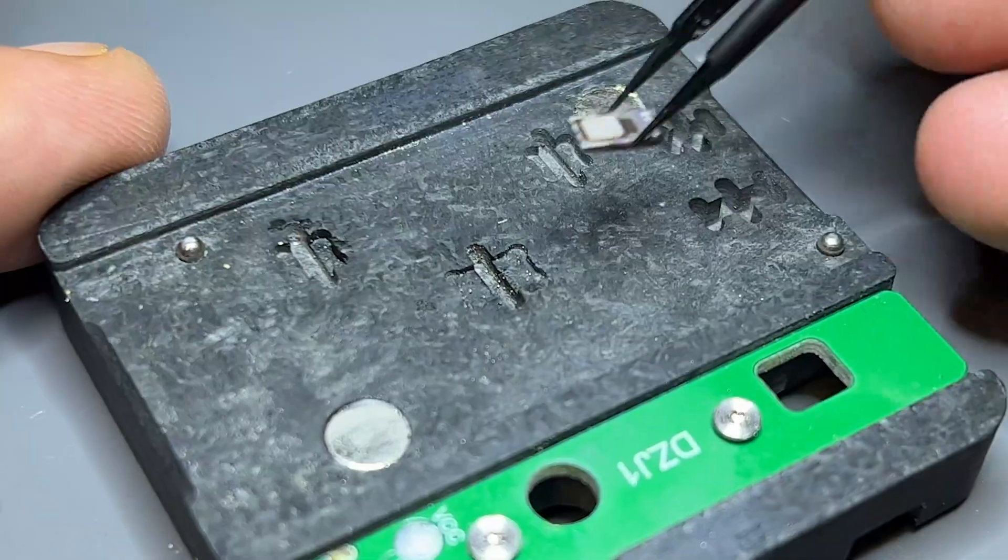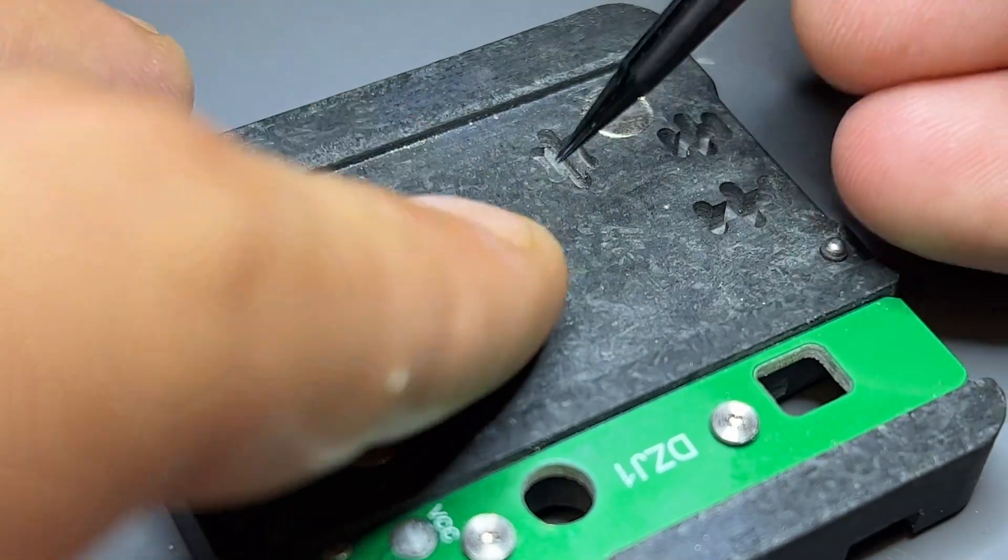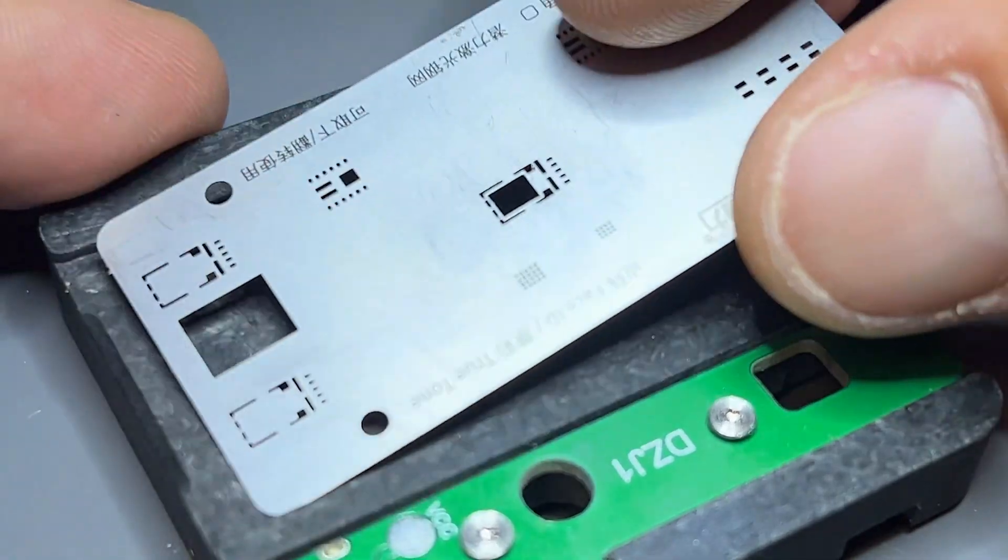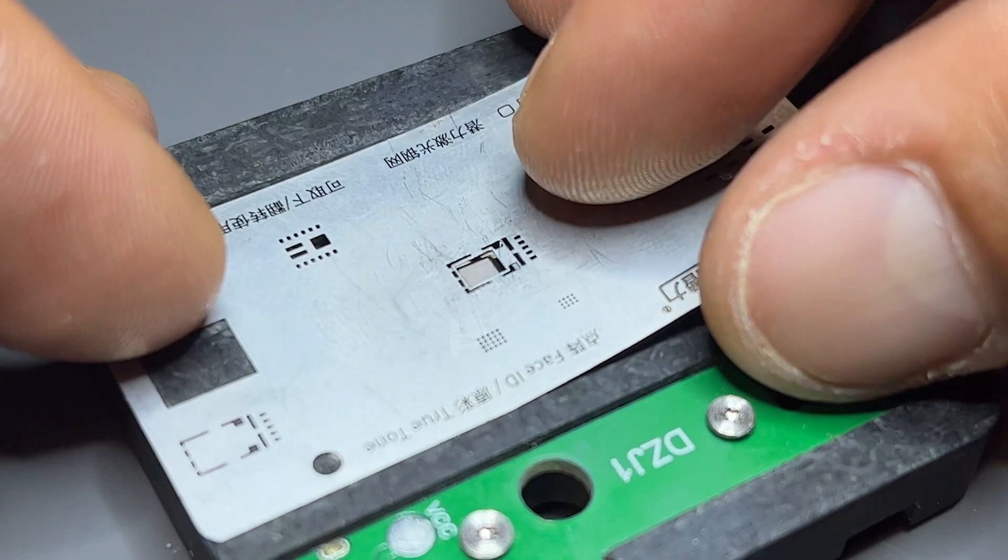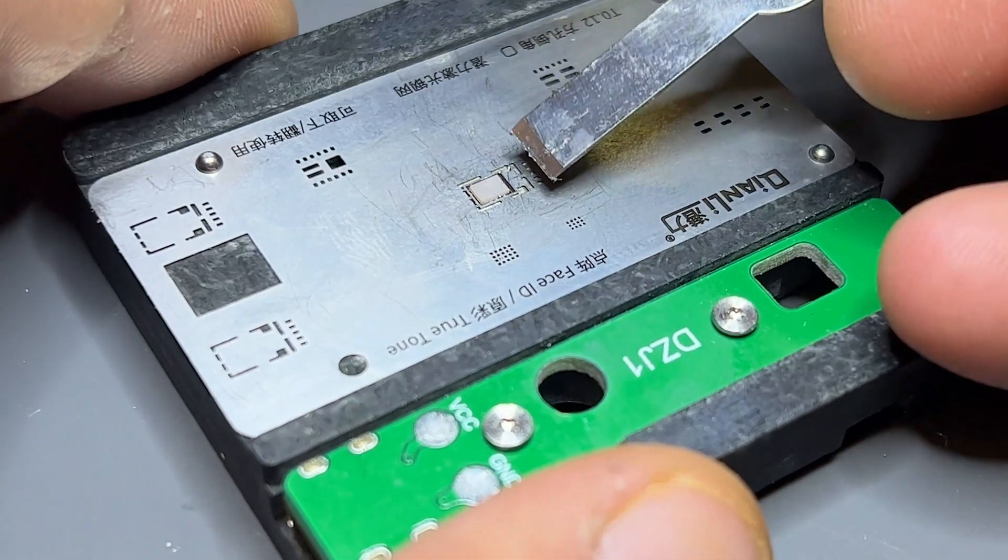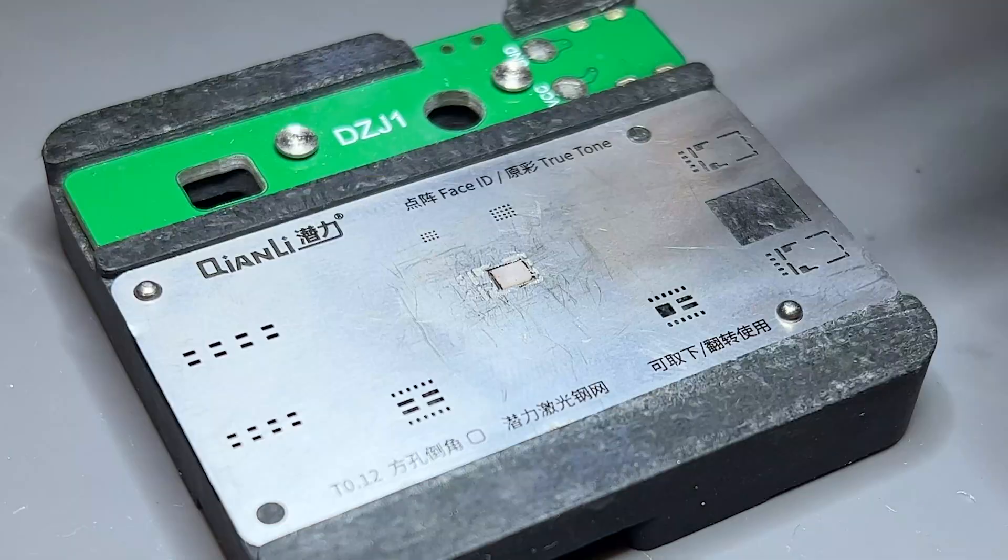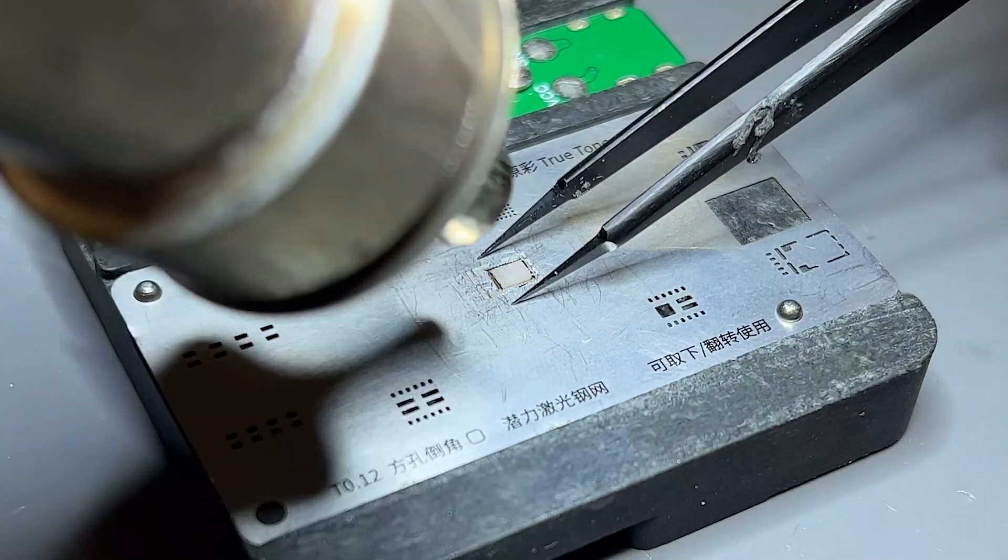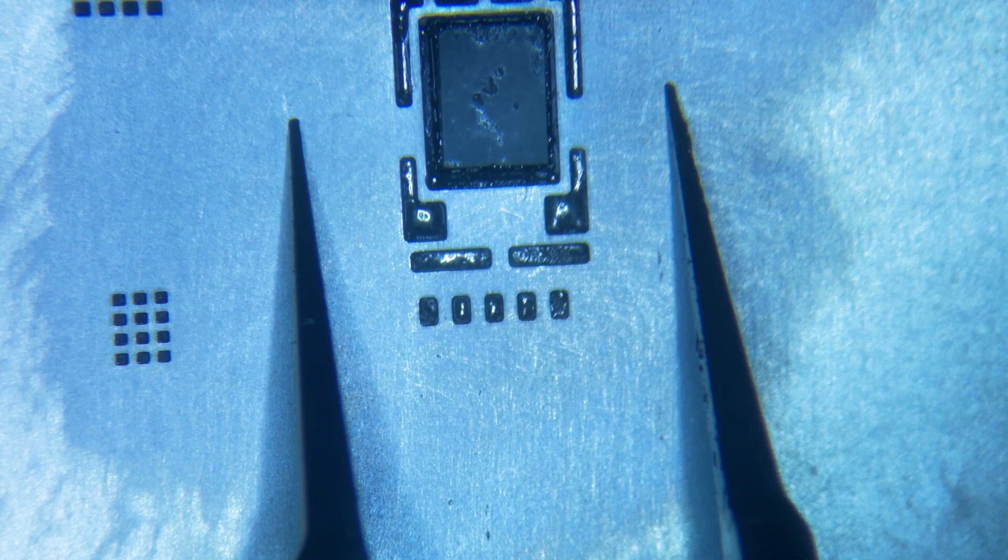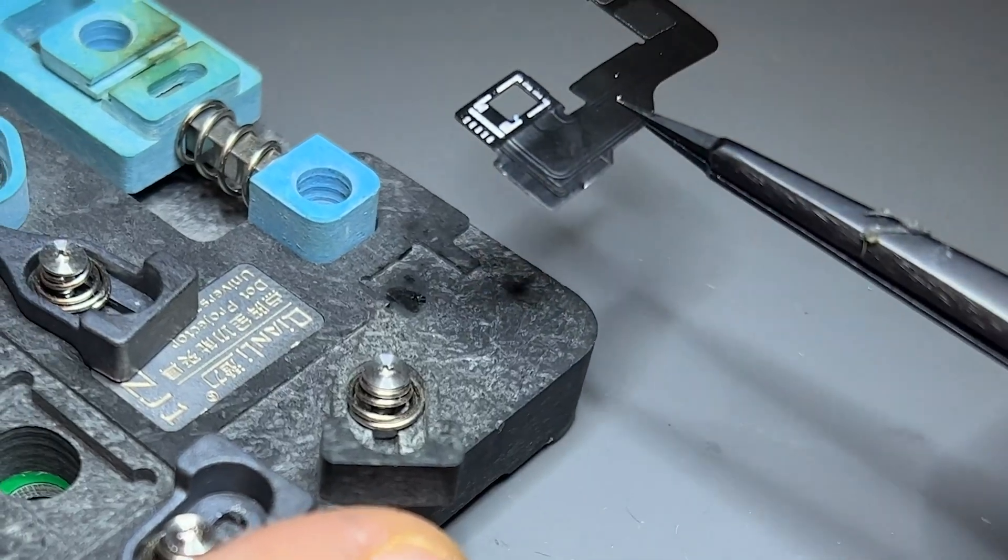Now it's time to re-ball the back of the dot projector. On the underside of this jig is this little stencil. Place the dot projector backside up into the jig and using 183 solder paste, apply to the pads. Then use hot air to liquefy the solder onto the dot projector. That completes preparation for that and can now be soldered into place on our newly programmed flex.